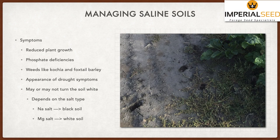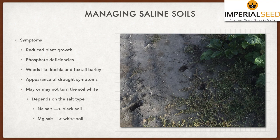When we have the start of salinity, the first thing we'll see is reduced plant growth and crop yield — that's what will alert us. We may also see some phosphate deficiencies in our crop, and weeds like kochia and foxtail barley start to appear. We may see drought symptoms in a year where moisture is adequate, but with pockets where plants are struggling. The soil may or may not turn white — that white crust is determined by what kind of salt we have. Magnesium salts leave a white crust on the surface, whereas sodium salts produce a black surface.